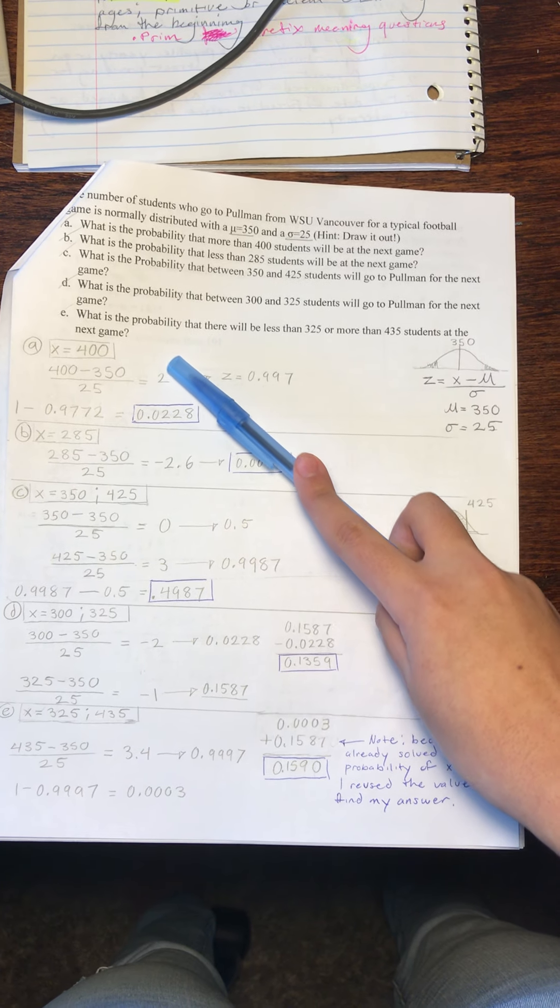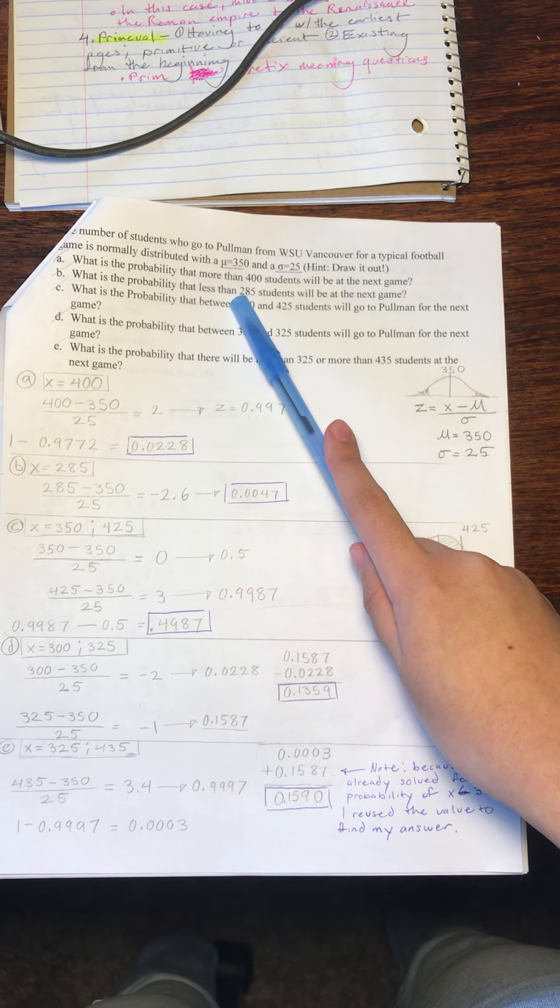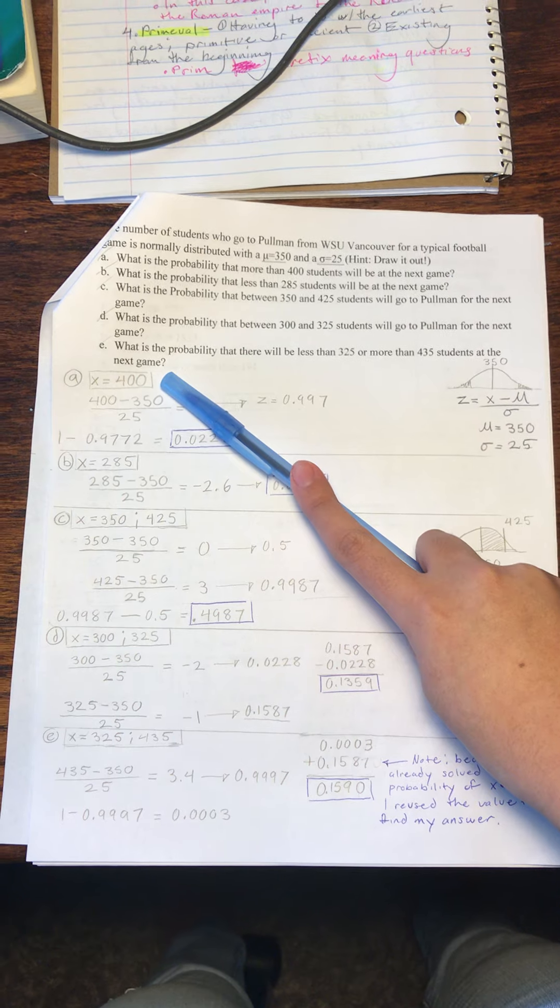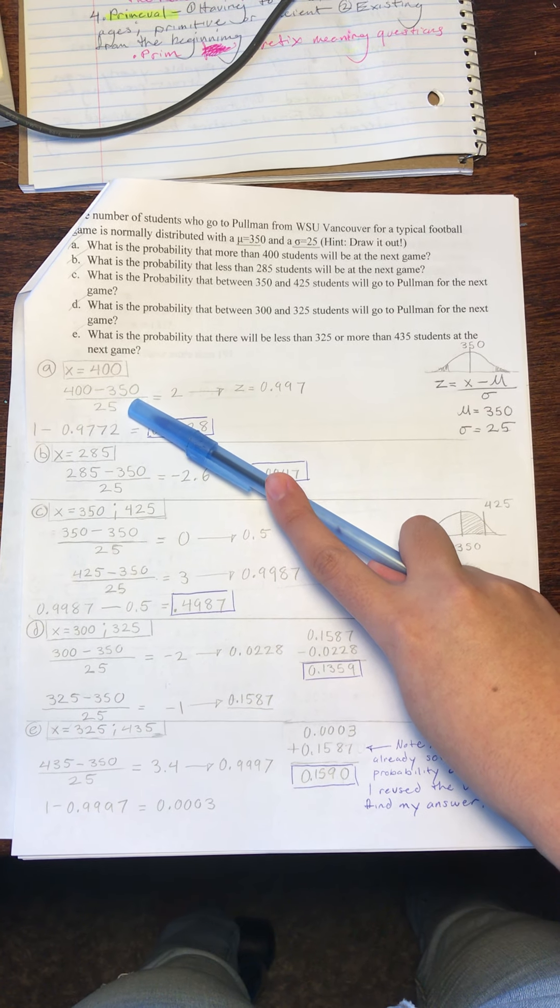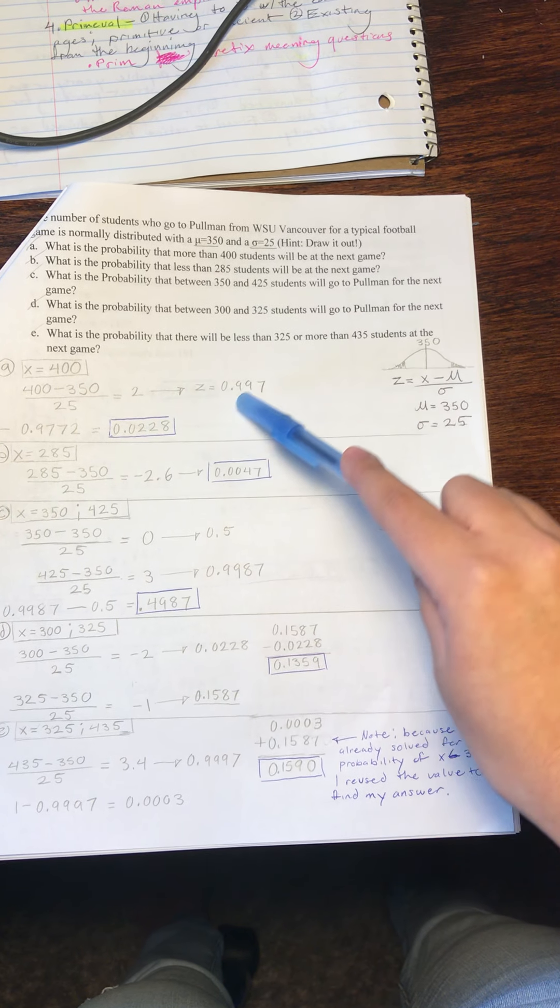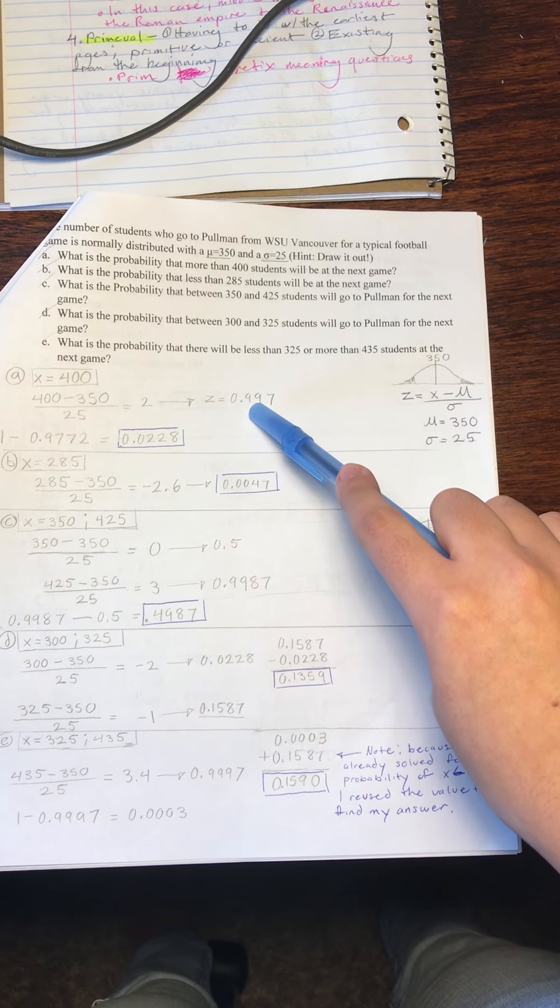So for part A, we are looking for the probability that more than 400 students will be at the next game. Our x will be 400. We will plug this information into the formula. We get 2, and we look that up on our z table and end up with the result of 0.9772.